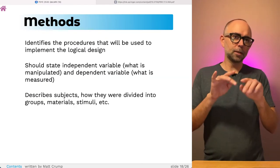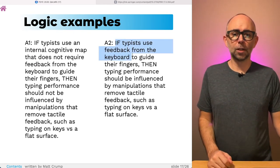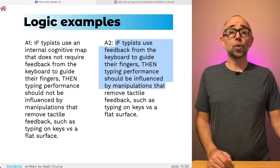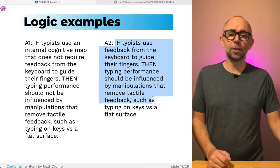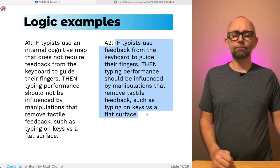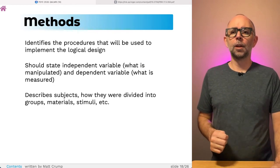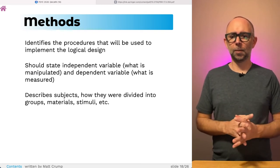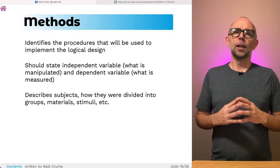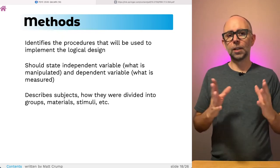Let's consider the second alternative. This is the one where typists learn associations between keys and what they feel like. So if typists use feedback from the keyboard to guide their fingers, then typing performance should be influenced by manipulations that remove tactile feedback, such as typing on keys versus a flat surface. I've anticipated here the fourth thing, which is the methods of the paper. The methods describe the procedures and experimental design that are going to implement a test of these logic statements.